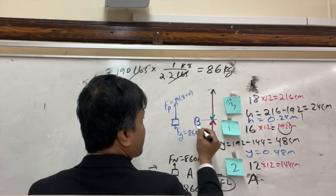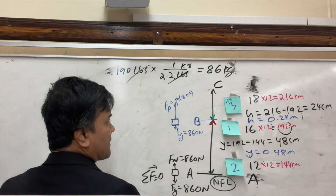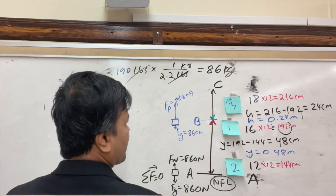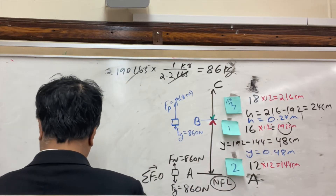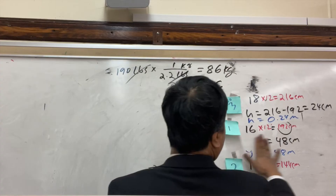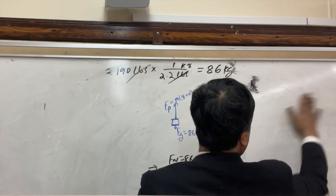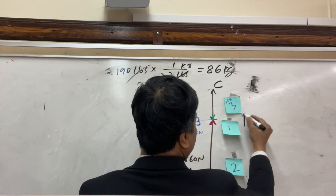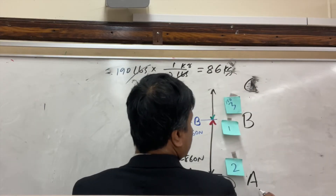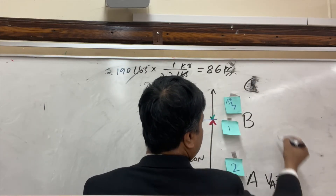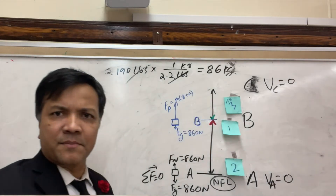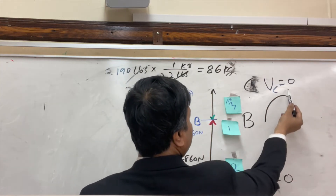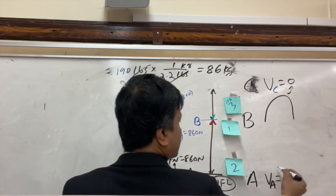We label three locations: A (standing still), B (takeoff point — transition between crouch and air), and C (top of the jump). Velocity at A is 0, velocity at C is 0 (at the top of the parabola the velocity is zero), and B is the moment of takeoff.